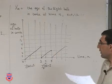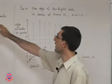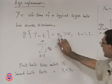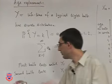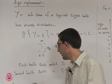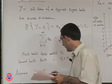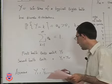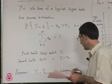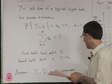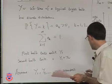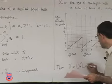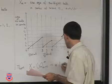We haven't specified how Y_1, Y_2 are related to each other. We know Y, the lifetime of a typical light bulb, has a known distribution. We also assume the lifetimes of all these bulbs are independent of each other. Under this assumption, the process X — this age process — is a Markov chain.